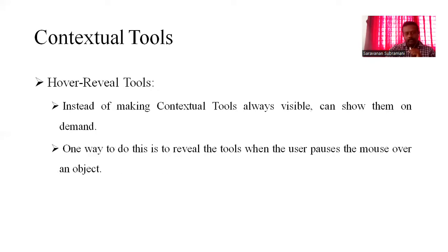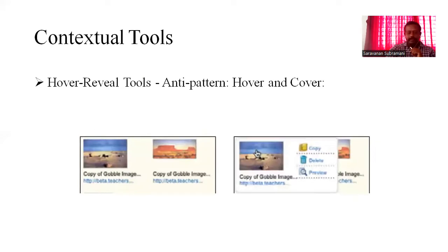The hover reveal tool, instead of making contextual tools always visible, can show them on demand. One way to do this is to reveal the tool when the user passes the mouse over the object. This type of tool helps identify how to use hover reveal tools and anti-patterns — how the hover covers the particular content.